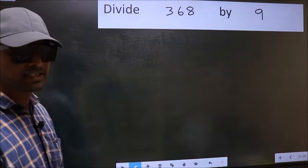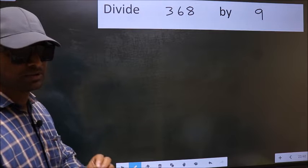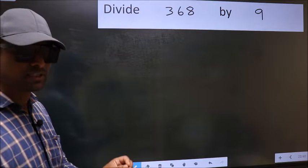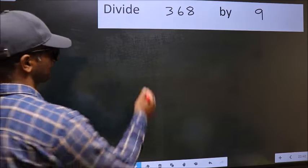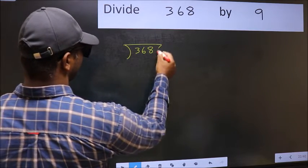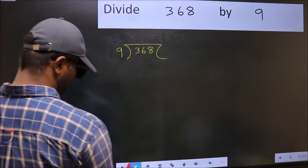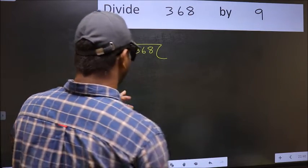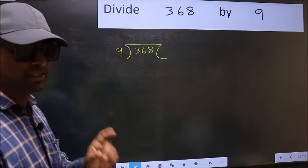What is the mistake that they do? I will let you know. But before that, we should frame it in this way. Okay. 368 and 9 here. This is your step 1.